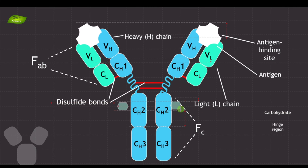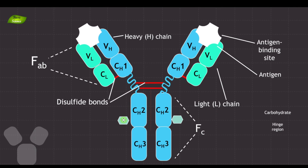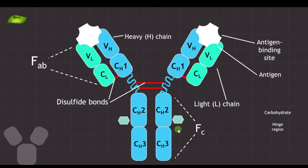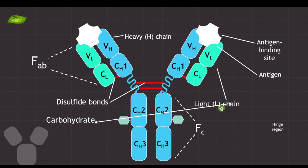Another important structural component of the antibody is the carbohydrate molecules. Antibodies contain carbohydrate molecules attached to the FC region. These molecules modulate antibody stability, solubility, and half-life. They also help in the interaction of the antibody with immune cells. These antibodies are tagged with these carbohydrate molecules, and they are now labeled in our illustration.